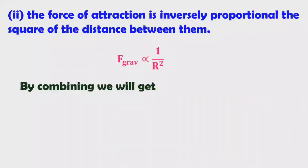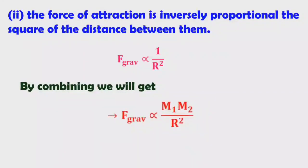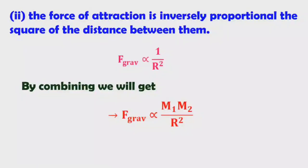By combining these two relations, we get F ∝ m1·m2 / R². To remove the proportionality symbol, we introduce a constant, so we write: F = G·m1·m2 / R². Here, capital G is the universal gravitational constant.